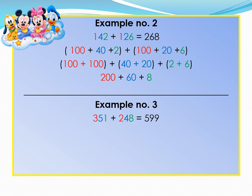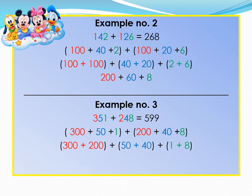351 decomposed as 300 plus 50 plus 1. 248 decomposed as 200 plus 40 plus 8. Then we group them according to their common place values. 300 plus 200, 50 plus 40 gives you 90, 1 plus 8 gives you 9. And 500 plus 90 plus 9 will give you 599.